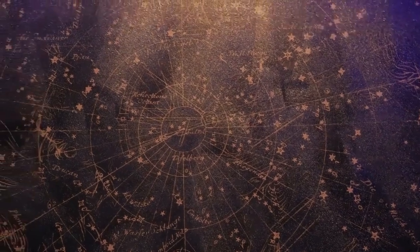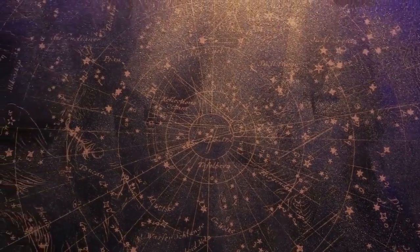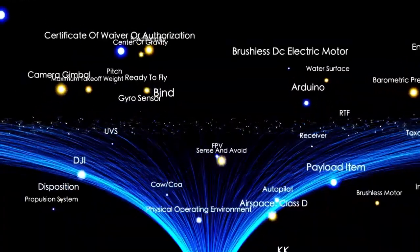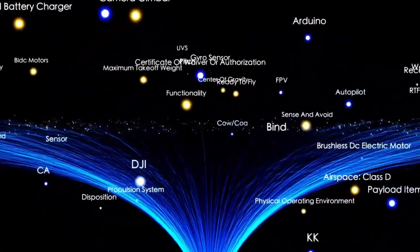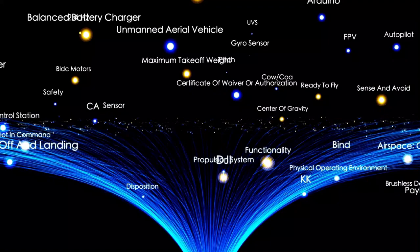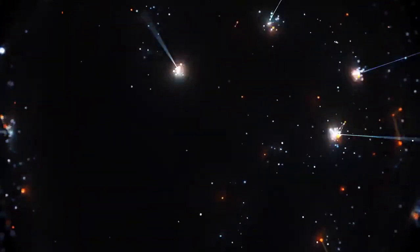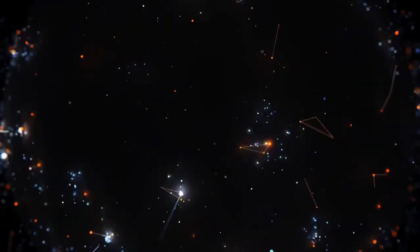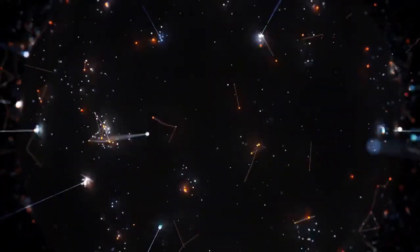Next, we encounter the captivating Centaurus constellation, known for its striking asterism, the Southern Cross. Within Centaurus lies Alpha Centauri, a triple star system comprising Alpha Centauri A, Alpha Centauri B, and Proxima Centauri. Alpha Centauri A and B form a binary pair, while Proxima Centauri, about 4.24 light-years away, is our closest known stellar neighbor. Though relatively close in cosmic terms, these stars still reside at vast distances, emphasizing the grand scale of celestial bodies.